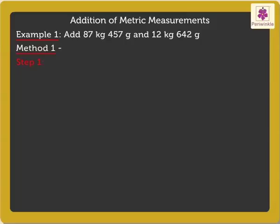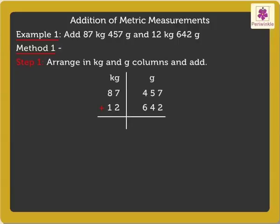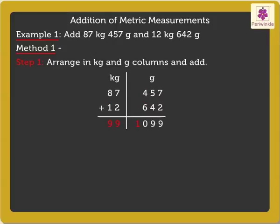Step 1: Arrange in kilogram and gram columns and add. Thus, on adding 87 kilograms 457 grams and 12 kilograms 642 grams, we get 99 kilograms 1099 grams.